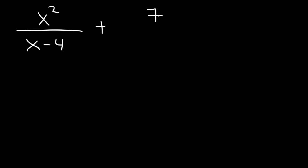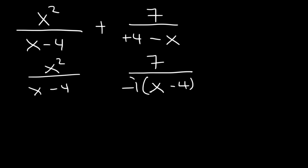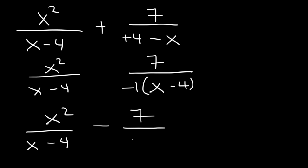Let's work on this example: x squared over x minus 4 plus 7 over 4 minus x. To get common denominators we don't need to multiply by anything — we just factor out negative 1 from 4 minus x. Taking out negative 1 turns negative x into positive x and positive 4 into negative 4, giving x minus 4. We can then move the negative to the numerator, rewriting it as negative 7 over x minus 4. Now combining gives x squared minus 7 over x minus 4. That's the answer.